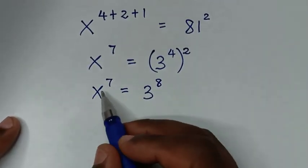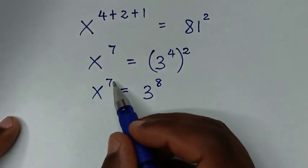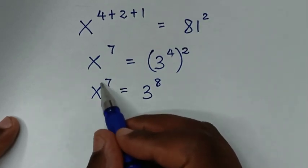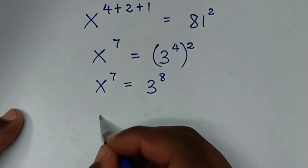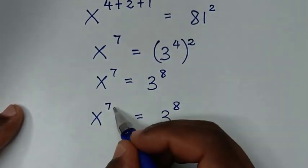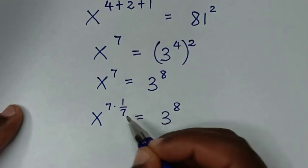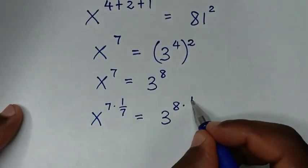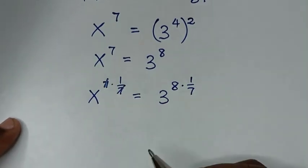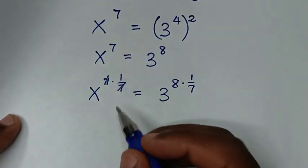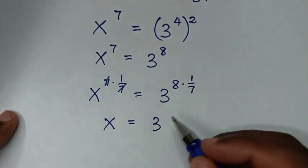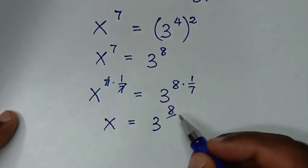To find the value of x, we multiply by power of 1 over 7 on both sides, which removes the power of 7. So x to the power of 7 times 1 over 7 on the left, and 3 to the power of 8 times 1 over 7 on the right. This power of 7 cancels, giving x to the power of 1, which is x, equal to 3 to the power of 8 over 7.